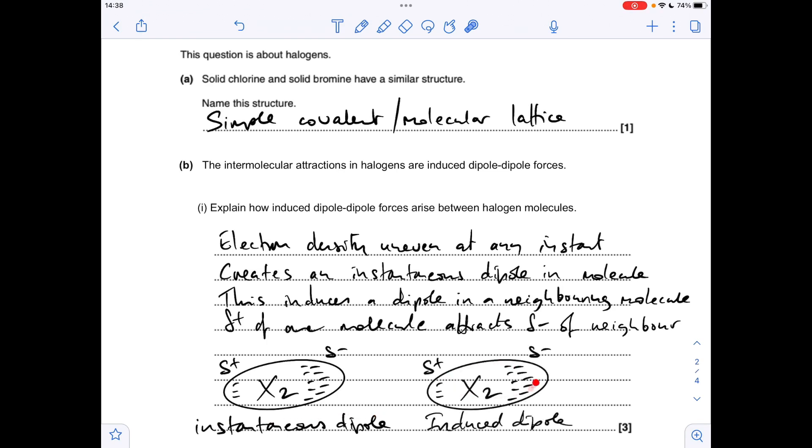So if we bring in the neighbouring molecule now, the electron density in this molecule is going to repel the electron density in the neighbouring molecule. So this is your induced dipole.